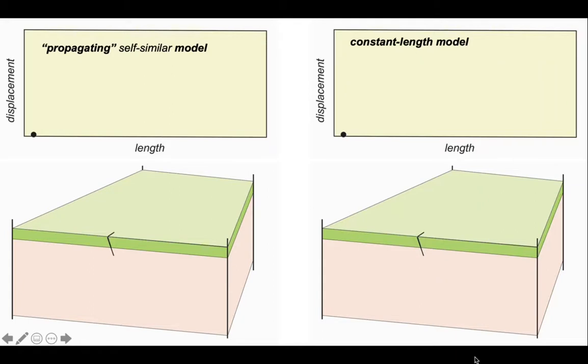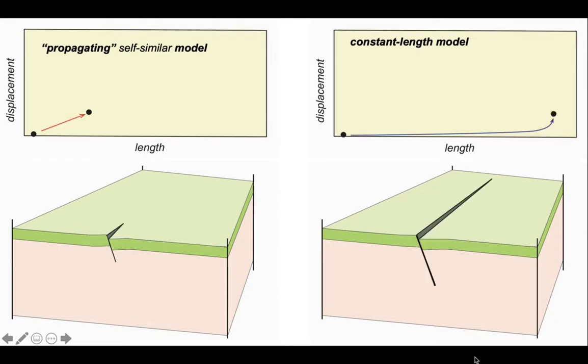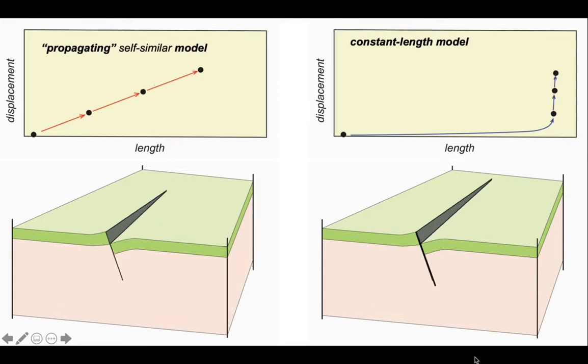An alternative way of thinking about faults is the constant length model. In this case, faults grow rapidly to a long length, and then once they have achieved their size, they then accumulate displacement. We end up at the same point in our history where the fault has grown and has acquired displacement, but they've done so in a different way.